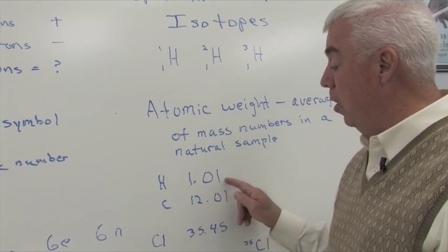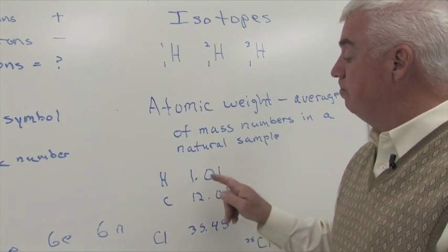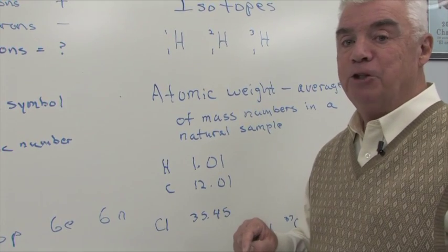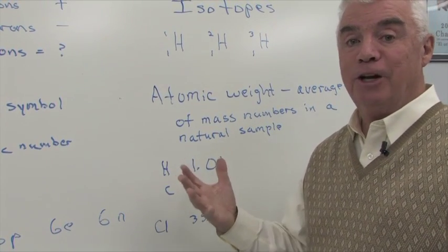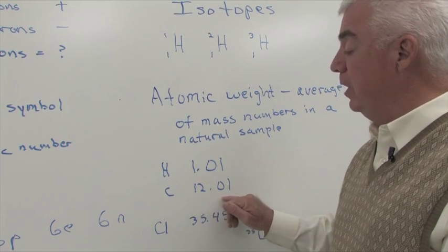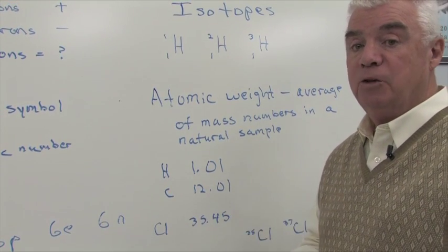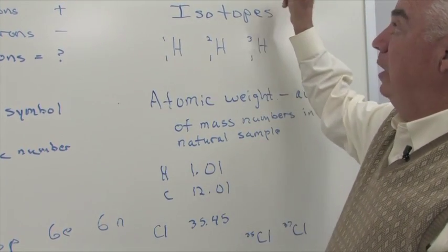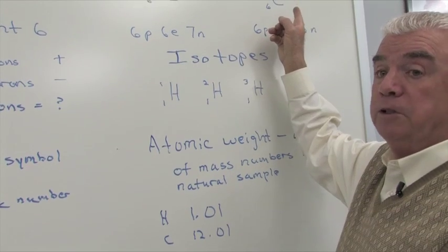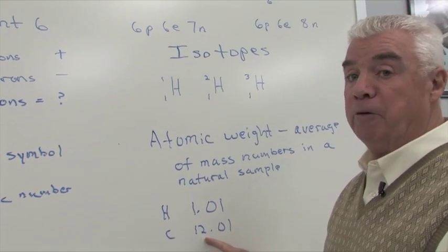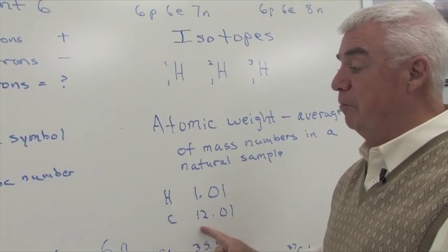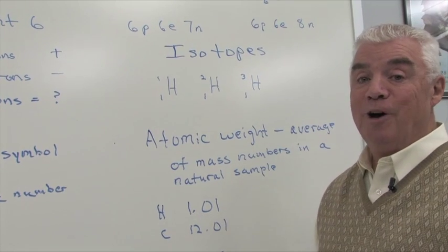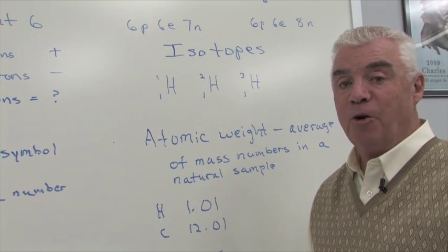And the same thing is true of carbon. When they measure the average mass number in a naturally occurring sample of carbon, they come up with this atomic weight, 12.01 atomic mass units. So if carbon were all C14, 13, well this number would have been 14. Or 13, it would have been 13. The fact that it's 12.01 means that carbon 12 is the abundant isotope in nature.